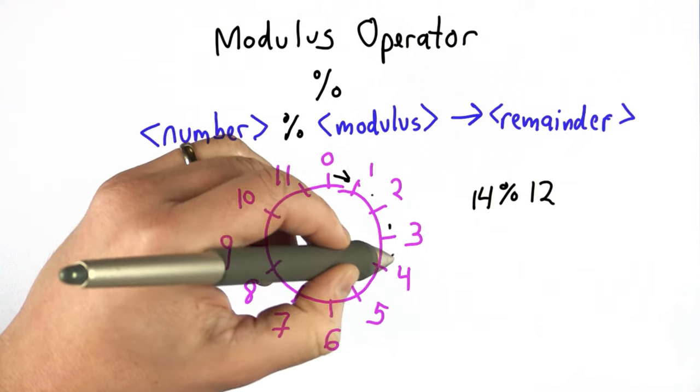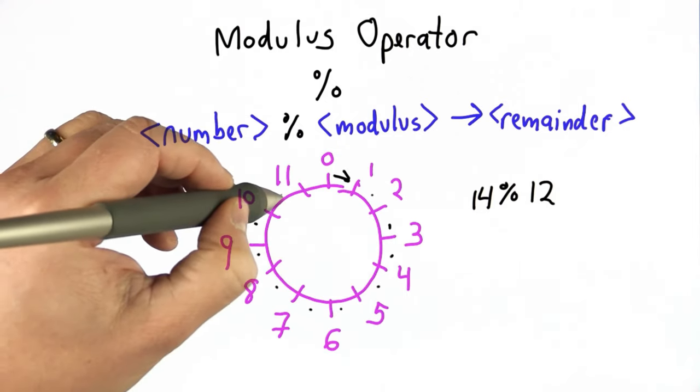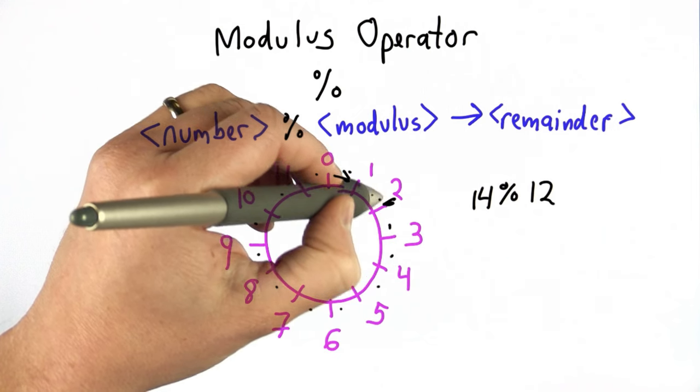1, 2, 3, 4, 5, 6, 7, 8, 9, 10, 11, 12, 13, 14, where we end up is 2.